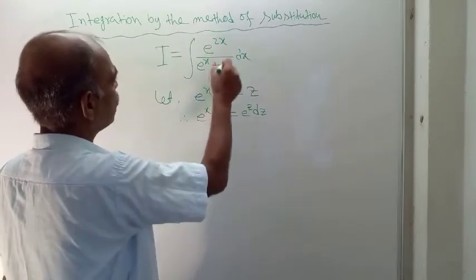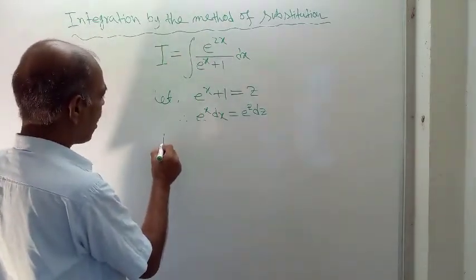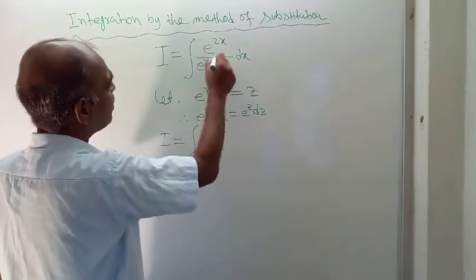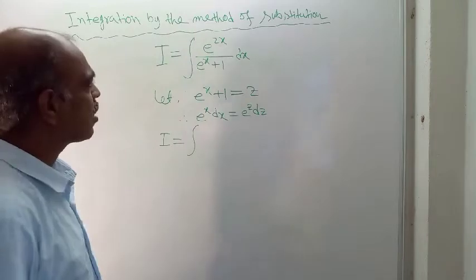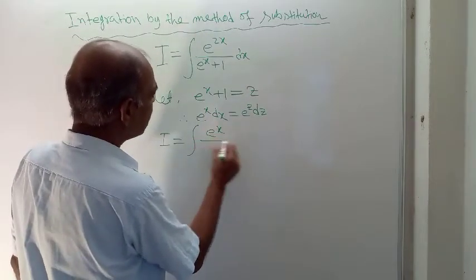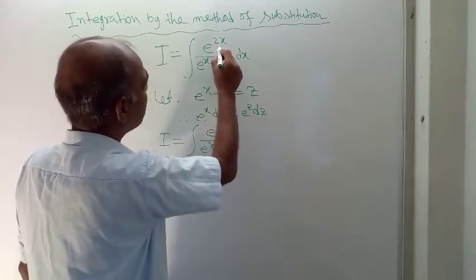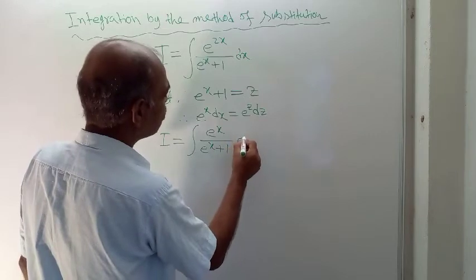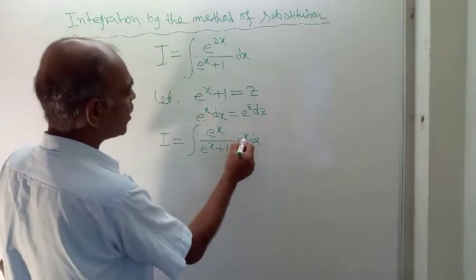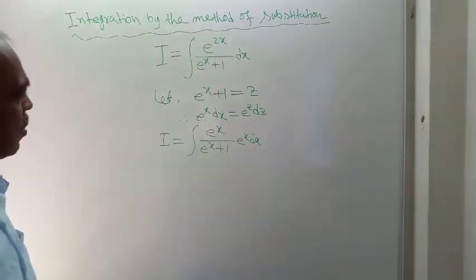Now we can use this substitution in the integration. So I equals the integral of e to the power 2x over e to the power x plus 1 dx. Here e to the power 2x can be split into two parts: one e to the power x in the numerator and e to the power x plus 1 in the denominator, then e to the power x dx. This e to the power x times e to the power x makes e to the power 2x.